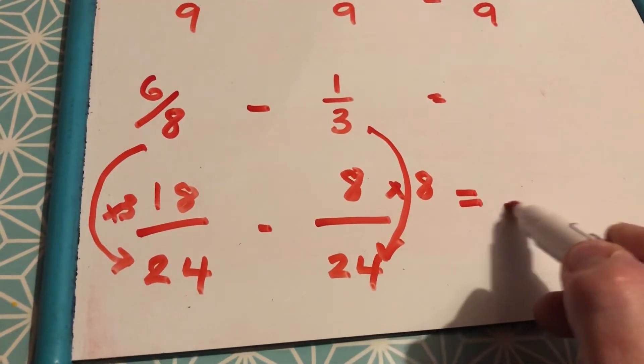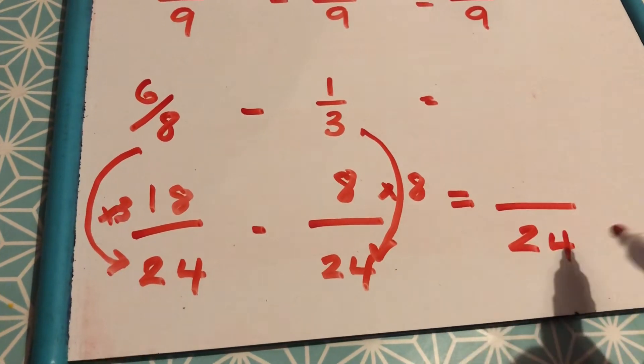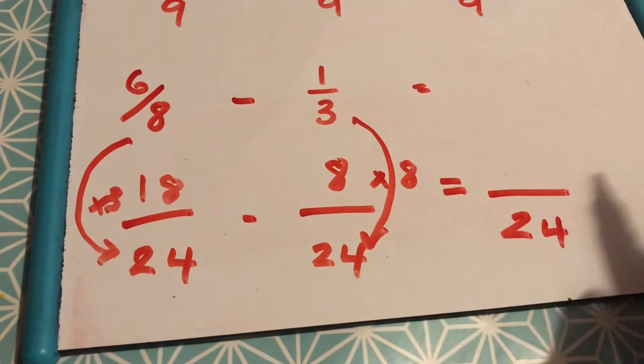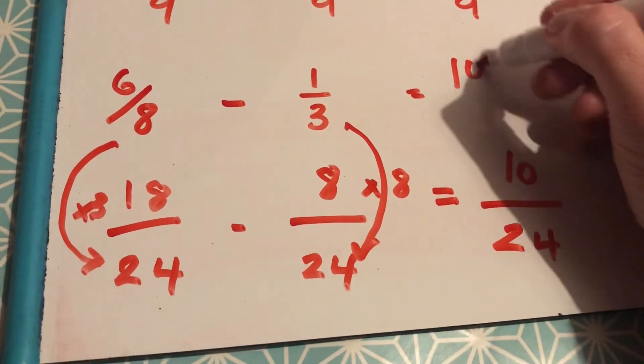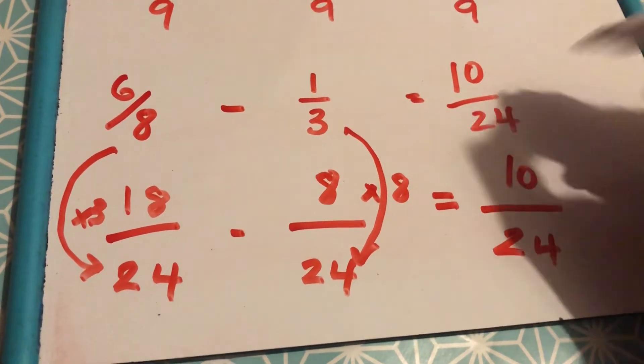Then, what you need to do is work out how many 24ths you've got left. 18, take away 8, gives you 10. So, the answer is 10 over 24.